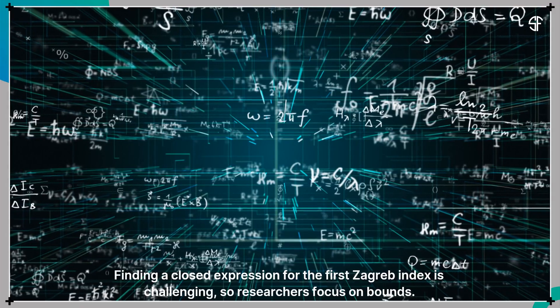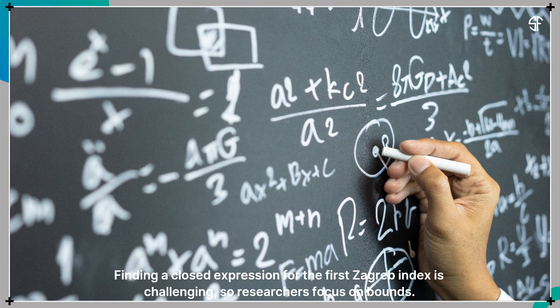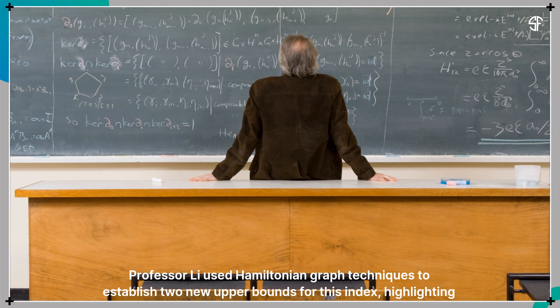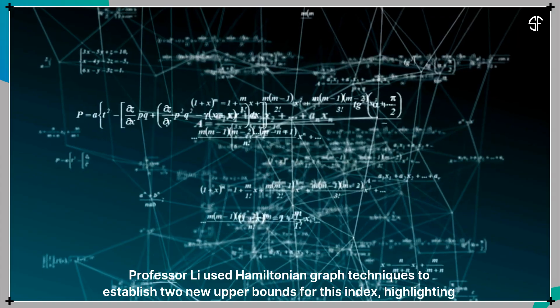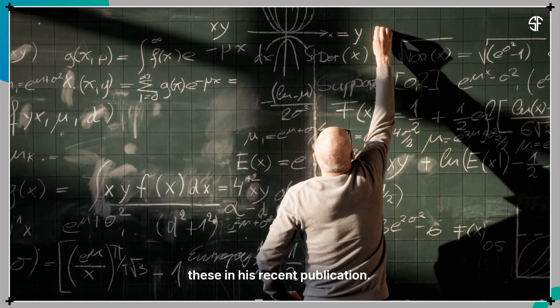Finding a closed expression for the first Zagreb Index is challenging, so researchers focus on bounds. Professor Rao Lee used Hamiltonian graph techniques to establish two new upper bounds for this index, highlighting these in his recent publication.